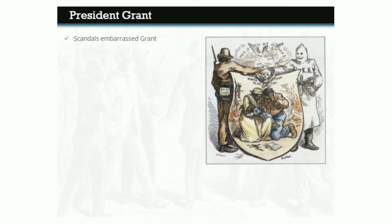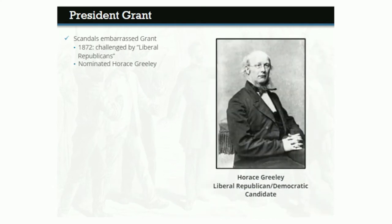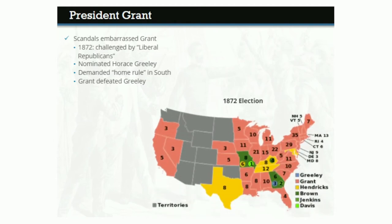Numerous scandals in his administration also embarrassed Grant and made him seem like a weak leader, despite his popularity. In 1872, a number of anti-Grant Republicans briefly formed the Liberal Republican Party and nominated newspaper publisher Horace Greeley to run against him. One of the Liberals' demands was that the government remove its troops from the South and restore home rule. Greeley became the Democratic Party's nominee as well, although Grant, who was still committed to Reconstruction, easily defeated him for a second term in 1872.